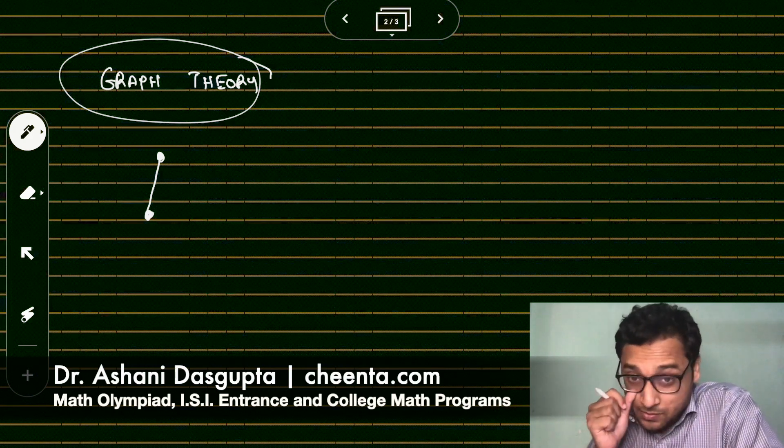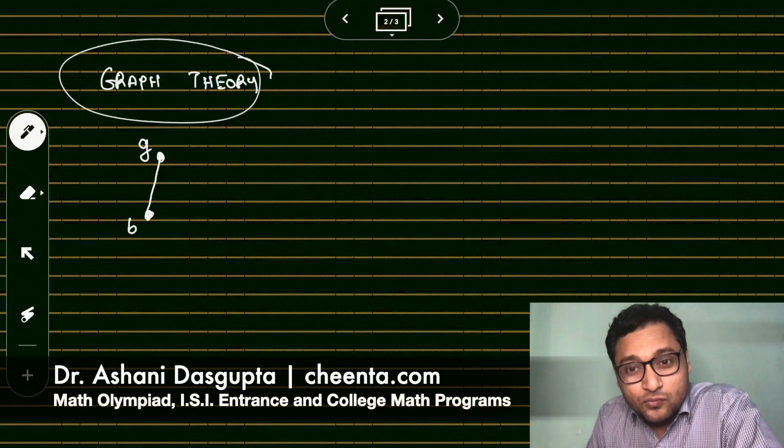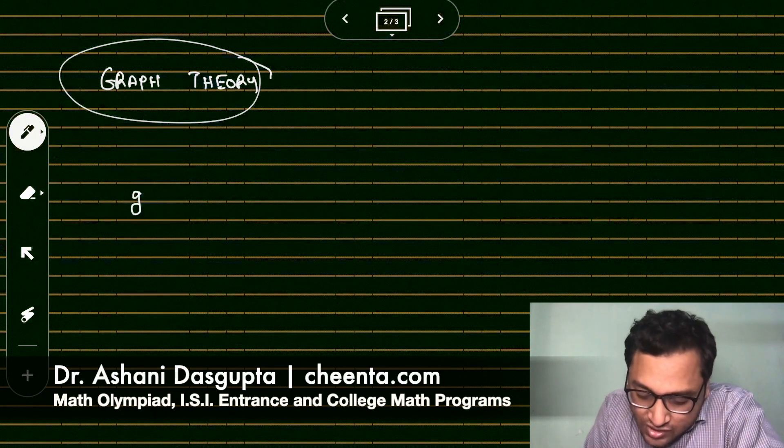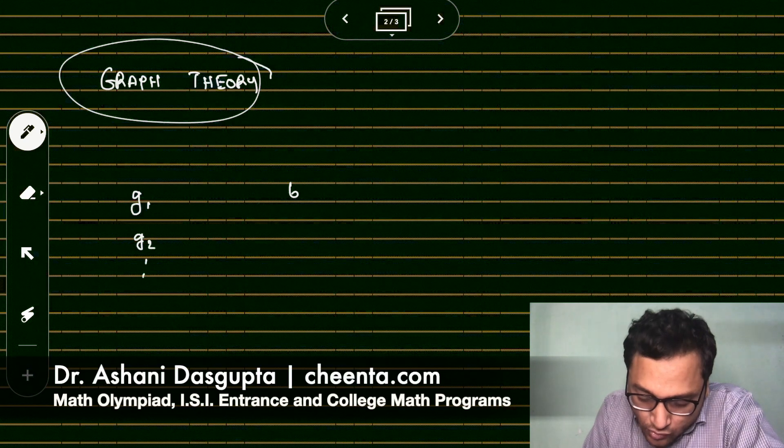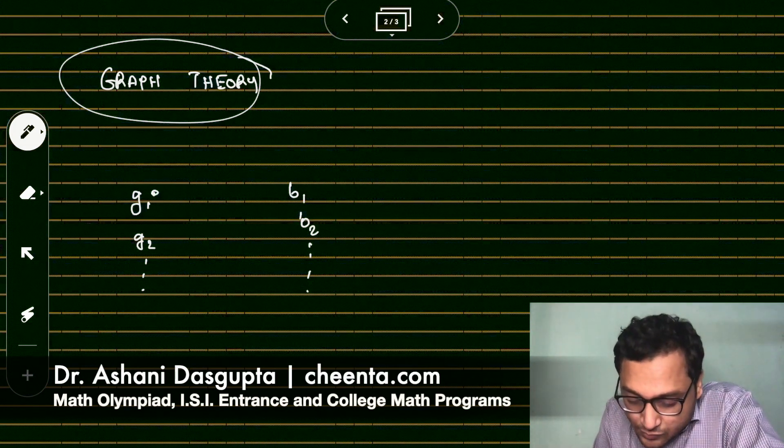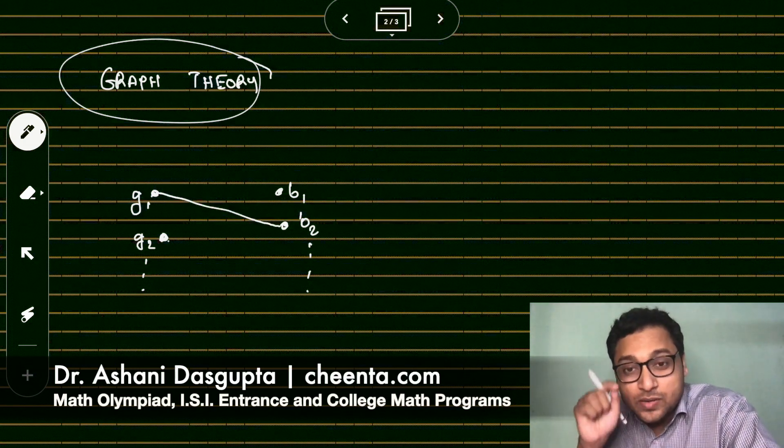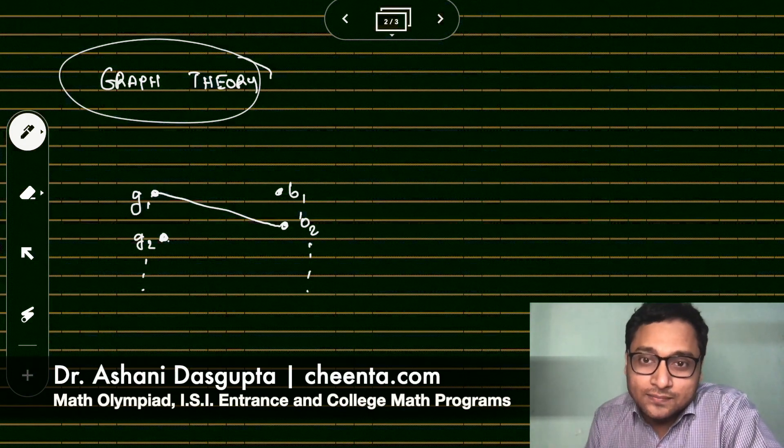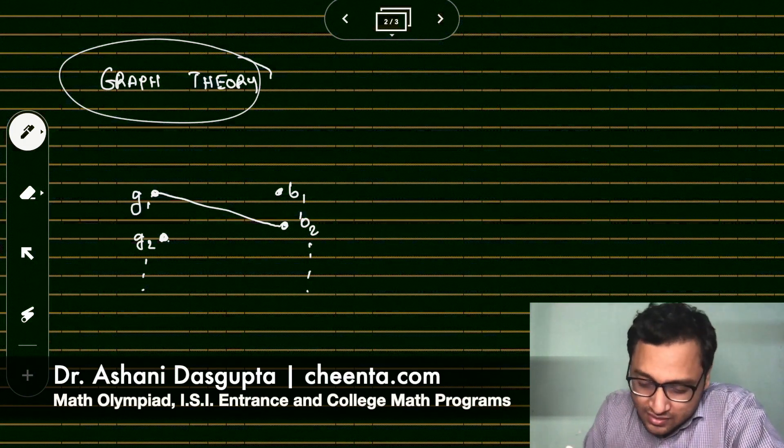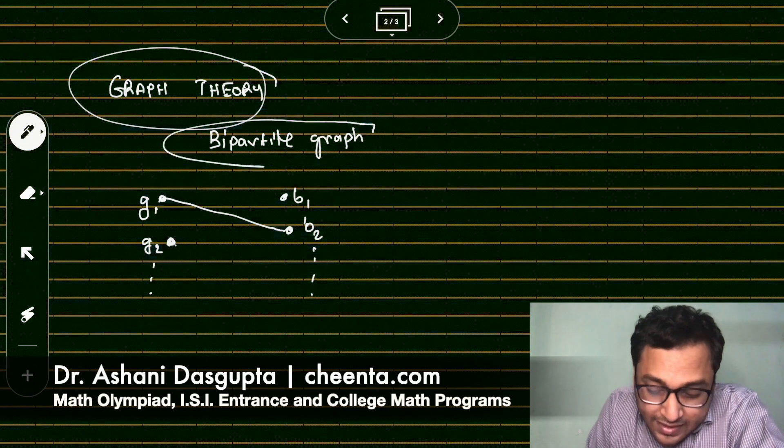For example, in this problem what we can do is we can connect those girls and boys which danced with each other. So maybe I can write it like this: there is G on one side and B on one side, G1, G2, and so on, B1, B2 on the other side. And we connect by putting a dot for each of them and we connect by an edge between a girl and a boy if they have danced with each other.